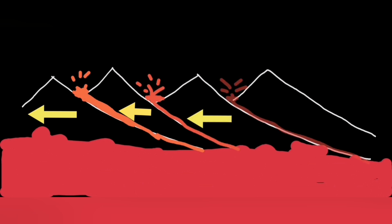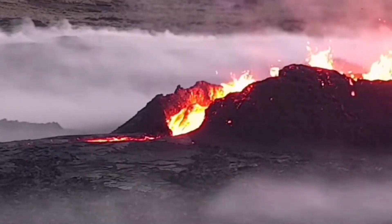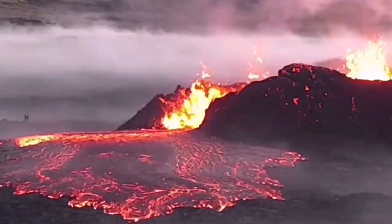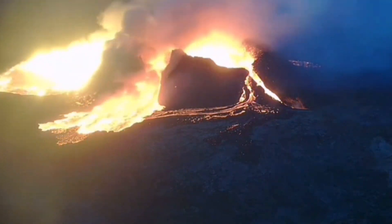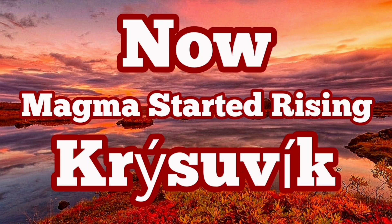This is a scary situation because the Svartsengí-Blue Lagoon-Grindavík volcanic system is now active. And the magma movement in that direction can actually increase the chances of the risk to the buildings and the structures in the vicinity of those areas, including Reykjavik, the capital of Iceland.